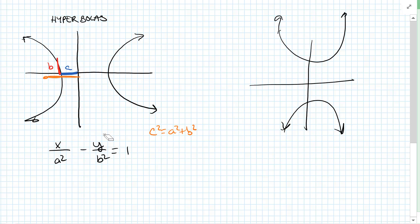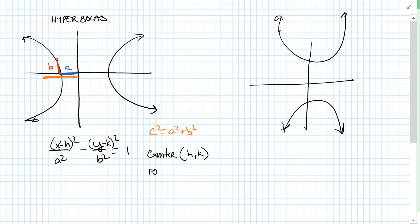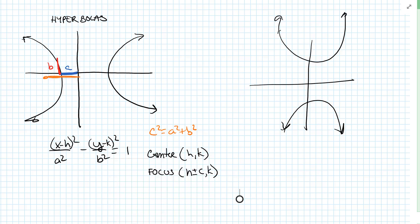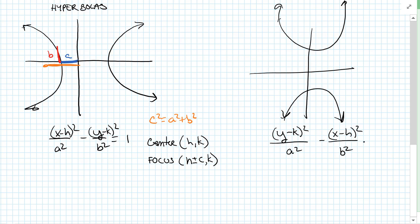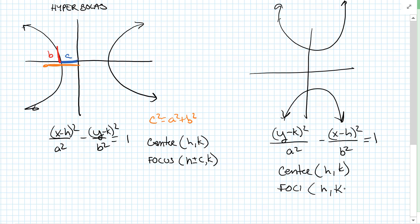Fixing the equation with translations: it's x minus h squared over a squared minus y minus k squared over b squared equals one. The center is h comma k, and the foci are at h plus or minus c comma k. If the hyperbola opens up and down, it's y minus k squared over a squared minus x minus h squared over b squared equals one. The center is still h comma k and the foci are h comma k plus or minus c.